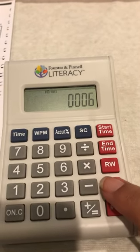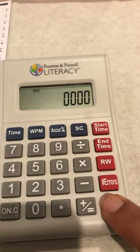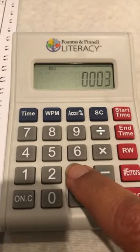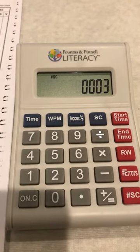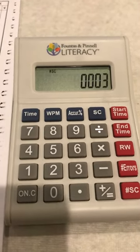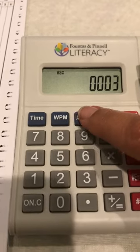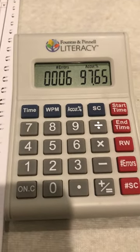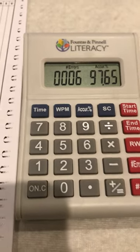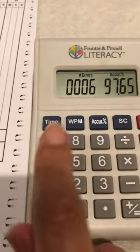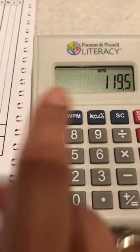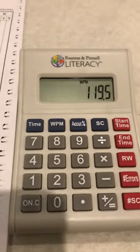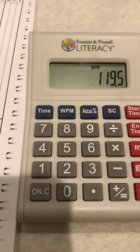And then the number of self-correction, she had three. Now what we'll do is after that's all been put in, we can go ahead and hit her accuracy, and that comes at 97.6 or 98%. Her words per minute is 119 or 120 words per minute, and I can note that in my form.